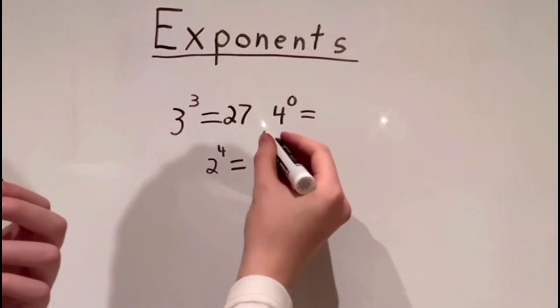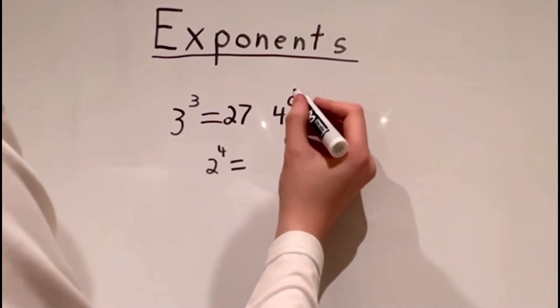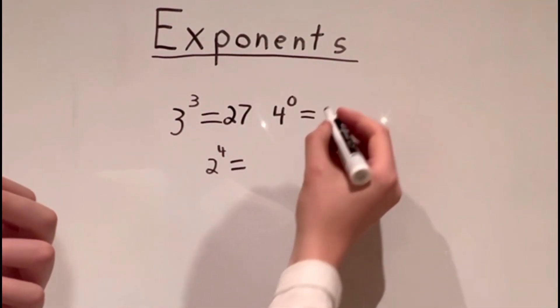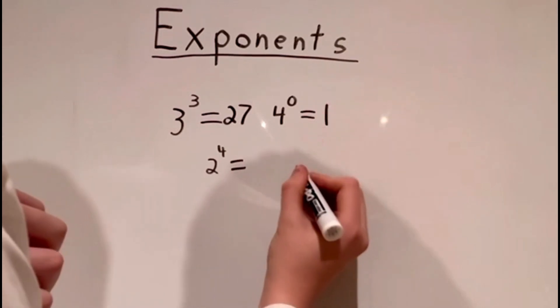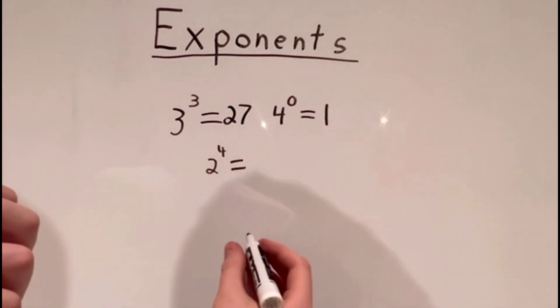Now we have 4 to the power of 0. Remember our rule, anything to the power of 0 always equals 1. So 4 to the power of 0 would be 1.